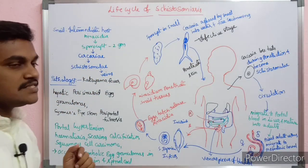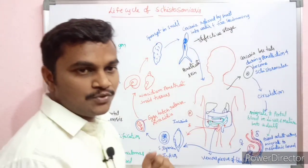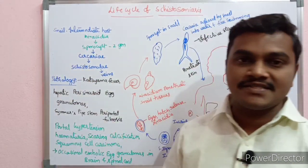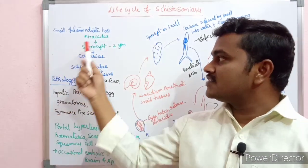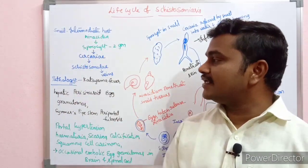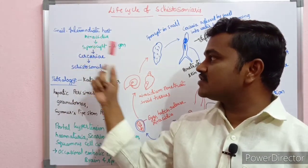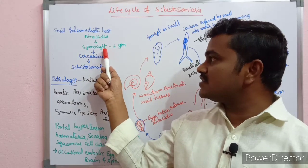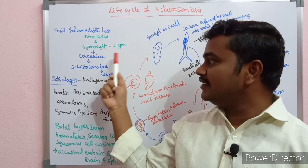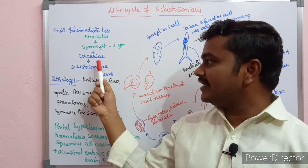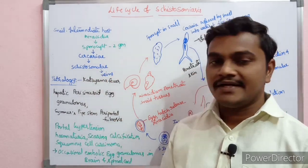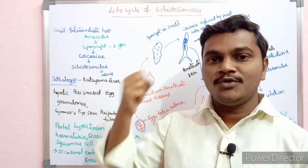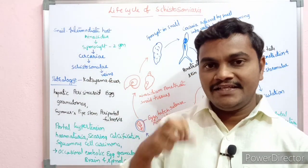Key points for Schistosoma haematobium: snail is the intermediate host; miracidium is produced first; miracidium develops into sporocysts — two generations of sporocysts; then cercariae and schistosomulae are formed. The cercariae then penetrate into the veins through the skin.